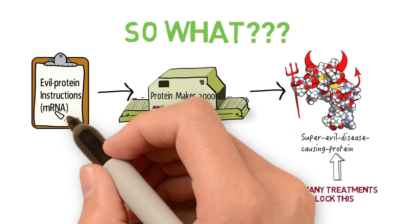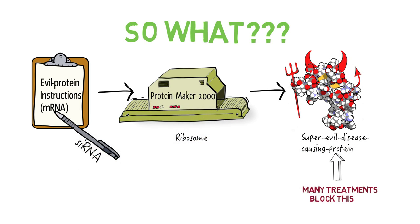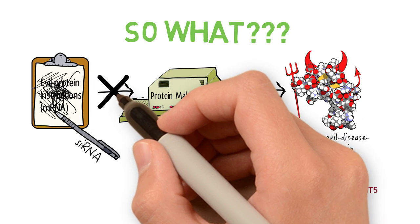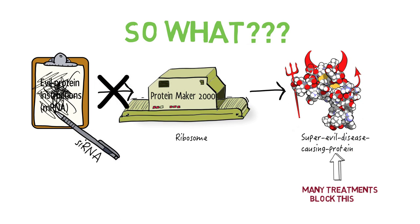With RNAi, you can introduce specific siRNA strands to target the complementary mRNA sequence of that disease-causing protein and stop its production.